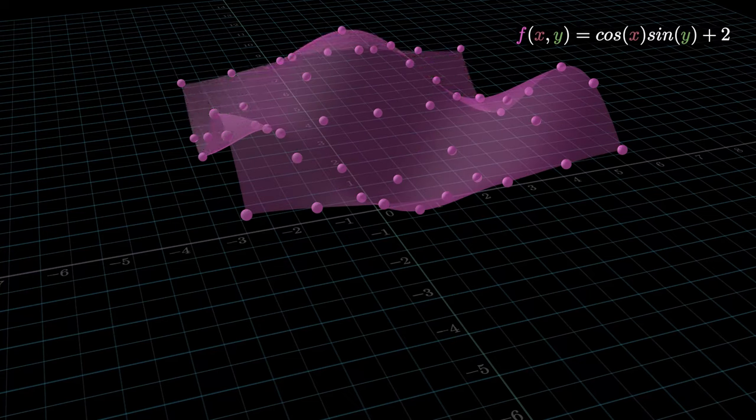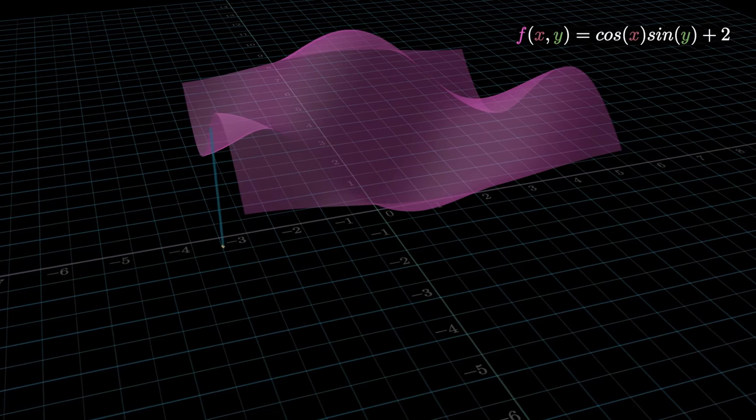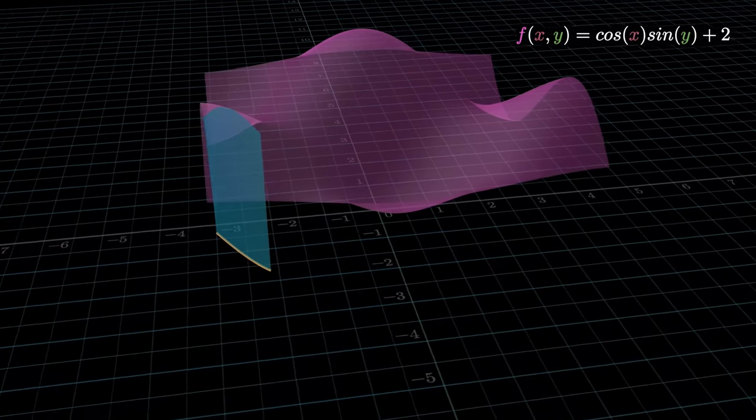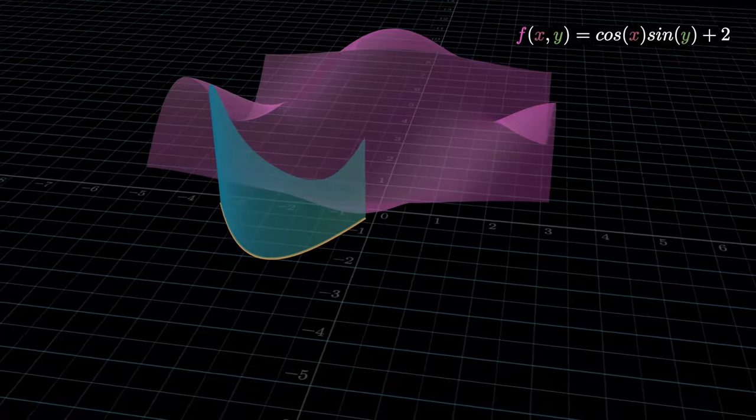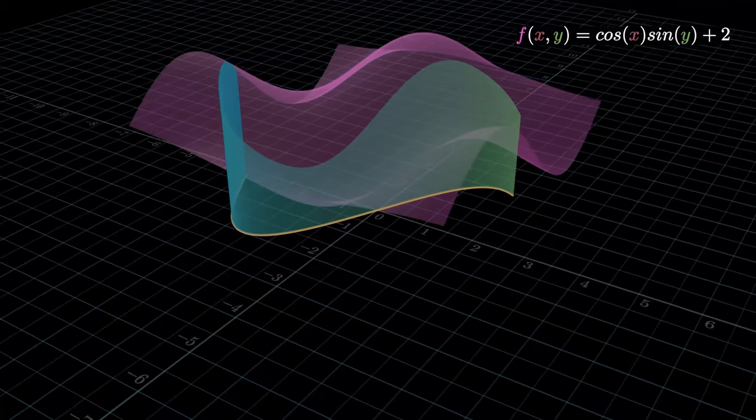This results in a surface in three dimensions. For line integrals, what we are interested in is the area swept underneath this surface as we travel along some curve on the x-y plane.